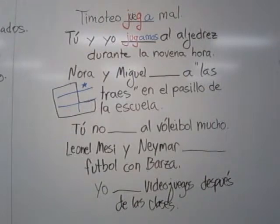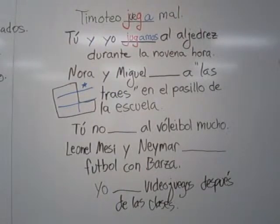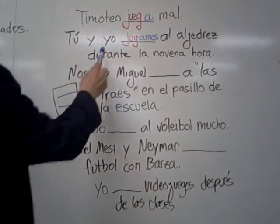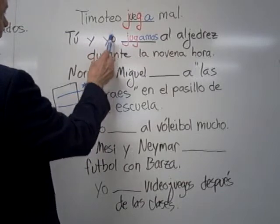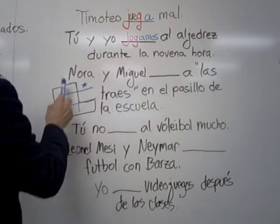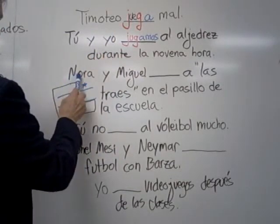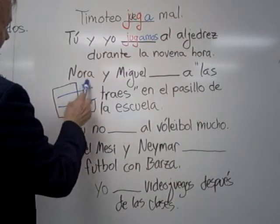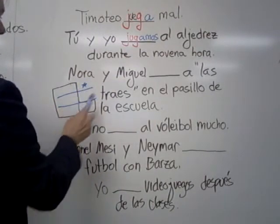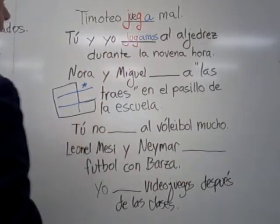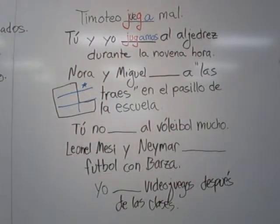Tú y yo jugamos al ajedrez durante la novena hora — you and I play chess during ninth hour. It is jugamos. We start with the yo, which is generally located right here, and we have another person with us, so we move from the singular side to the plural side — that's nosotros. It is outside the boot, so the stem does not change. It's jugamos.